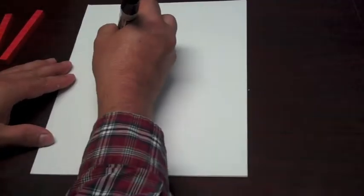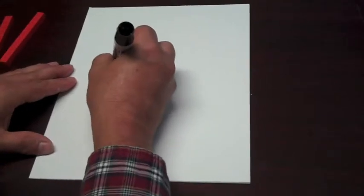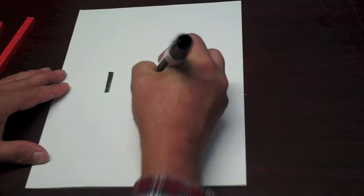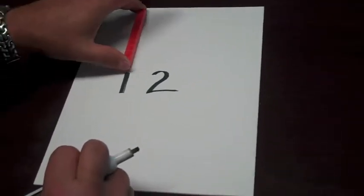We're going to subtract. First we're going to start by diagramming numbers. This is twelve.